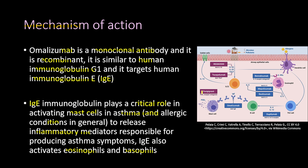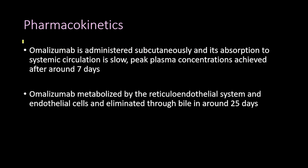One more point: the last three letters in 'omalizumab' refer to the monoclonal antibody — 'M' for monoclonal and 'AB' for antibody. As you can see in this picture, omalizumab binds to IgE and inhibits it.